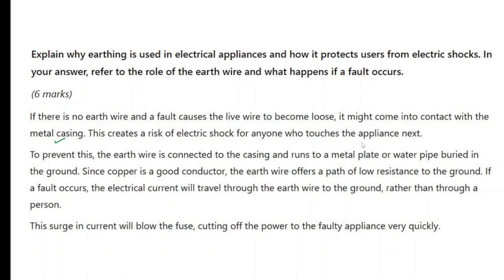Next, because the question says explain why earthing is used in electrical appliances, this is why, for the safety. To prevent this, the earth wire is connected to the casing and runs to a metal plate or water pipe buried in the ground.